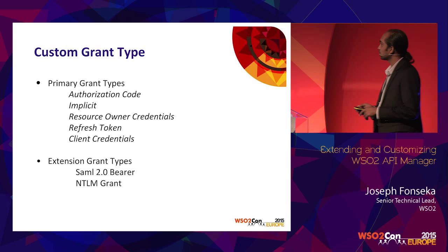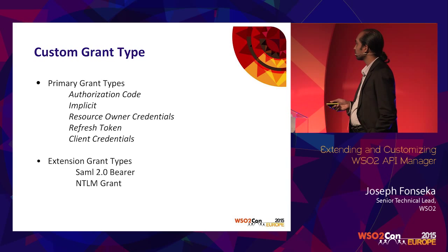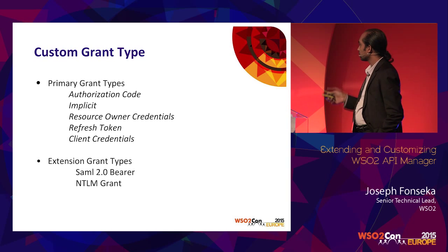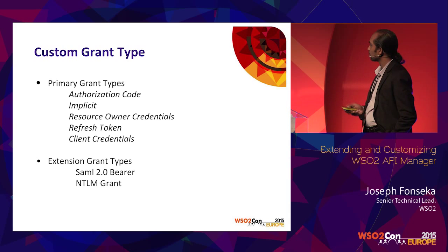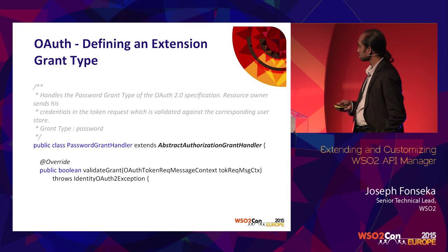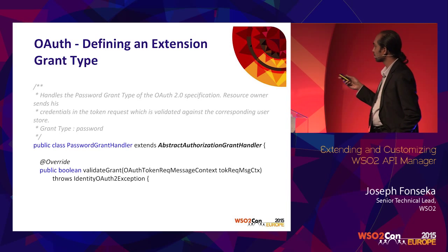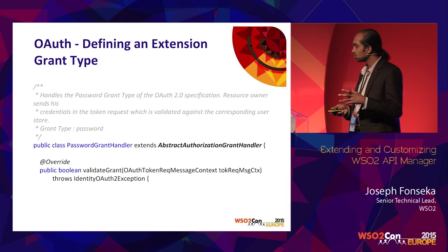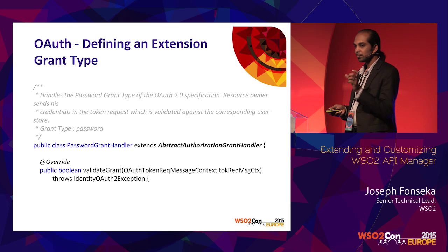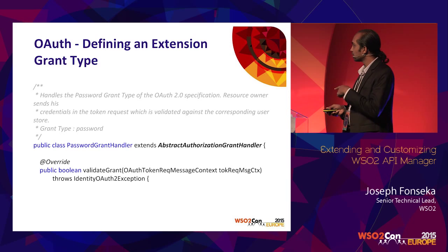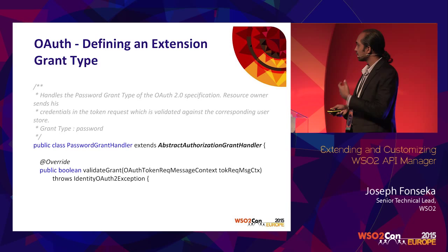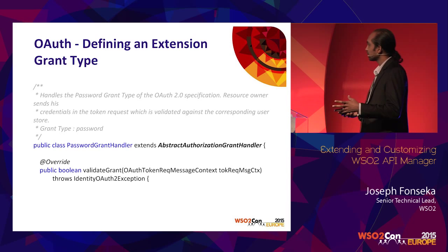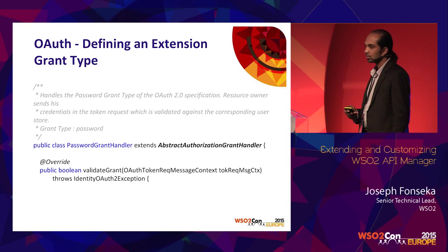When it comes to grant types, these are the primary grant types we support. We also support some extended grant types like SAML2 bearer and NTLM grant types. If you are writing a new grant type, all you have to do is extend the provided interface. I have a snippet of the password grant handler here. If you want a simple modification — for example, attaching the user's email address in a password grant type to the token — you can simply override the password grant handler. Otherwise, if you want a completely new grant type, you can extend the interface.